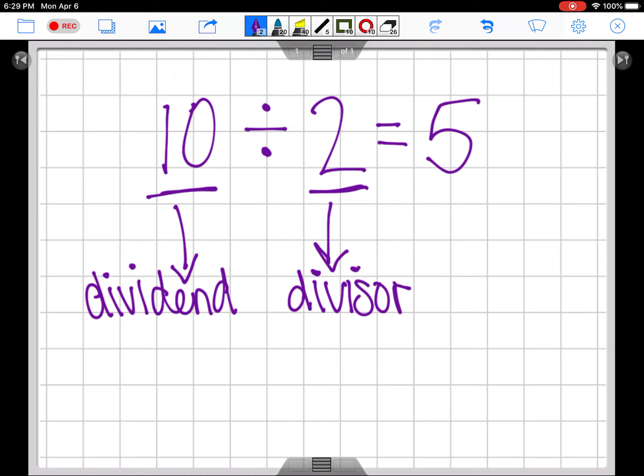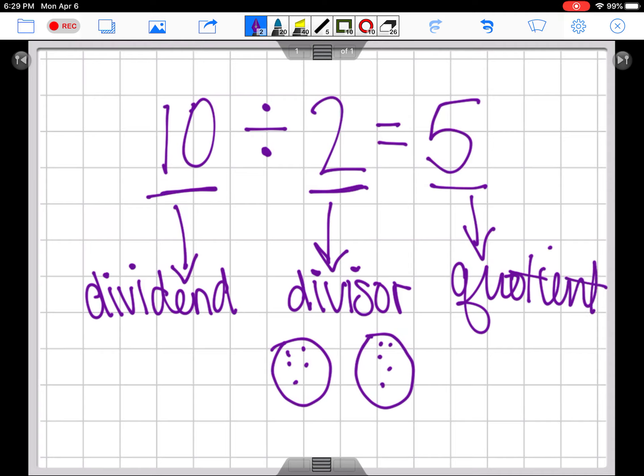So that means that when we do this, we know two groups, you might do something like this. The dividend is the one getting split into groups. So we know we'd have to do something like one, two, three, four, five, six, seven, eight, nine, 10. Beautiful. And you guys have all done this. This is way too easy for you guys. We know our quotient is going to tell us how many are going to end up in each of the equal groups. It's our answer. We love it.